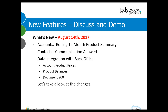On the account screen, most of you are probably familiar with the little section that shows the rolling 12-month product summary. We've added the last purchase date — or last order date — to that grid. So not only will you see all the products the customer is buying and which ones they buy the most or least of, you'll also see the last time they ordered each product.